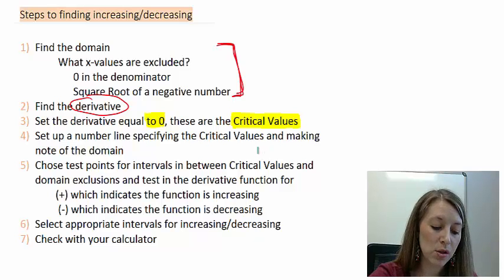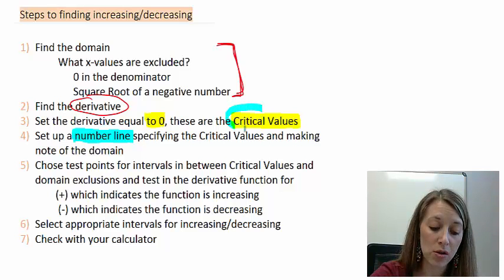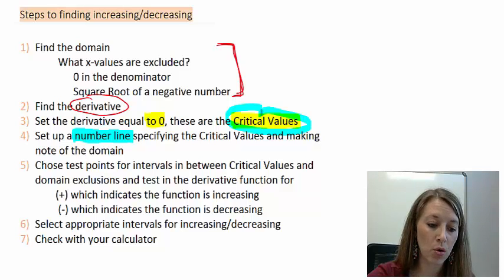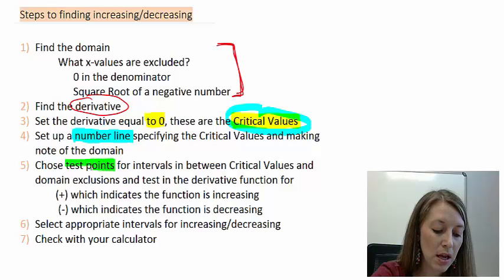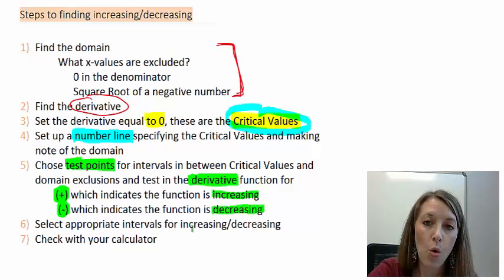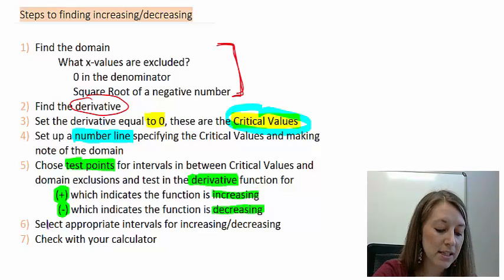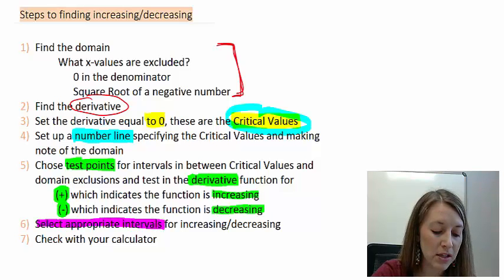After we find these critical values, we put them on a number line, which represents our x-axis — which x values are represented across our entire graph. Once we get this x-axis set up with our critical values, we need to figure out what's happening in between them. We do that by testing points in our derivative function, because we're looking for slope — positive slopes mean the graph is increasing, and negative slopes mean the graph is decreasing. Once we get our sign chart filled out, that gives us the answer, and we select the appropriate intervals.